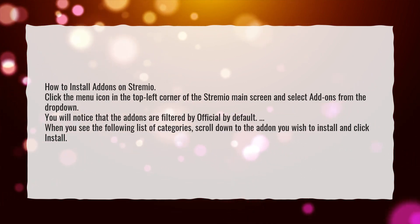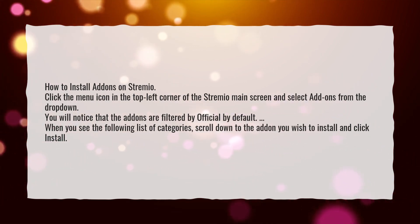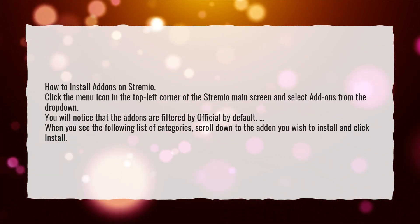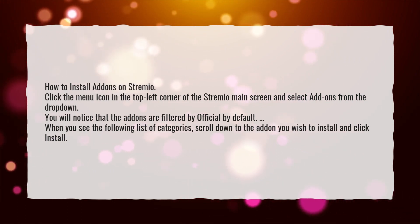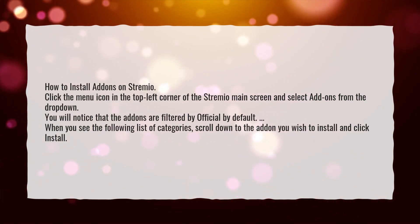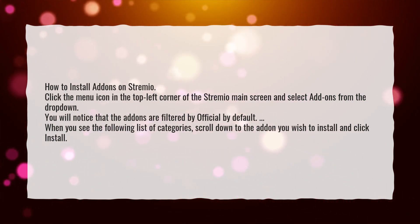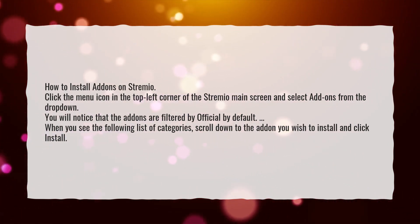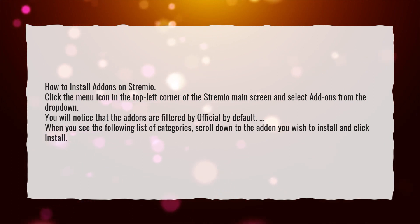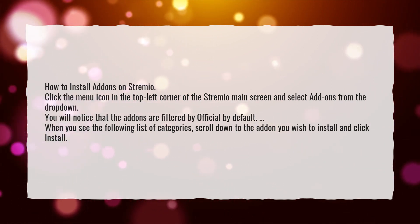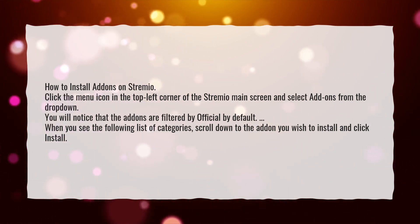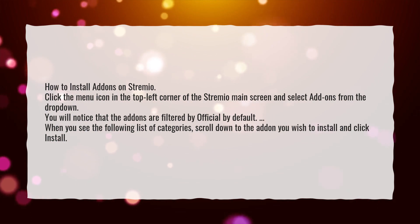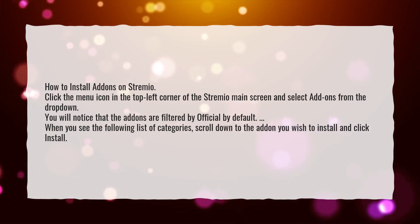Click the menu icon in the top left corner of the Streamio main screen and select add-ons from the drop-down. You will notice that the add-ons are filtered by official by default. When you see the following list of categories, scroll down to the add-on you wish to install and click install.